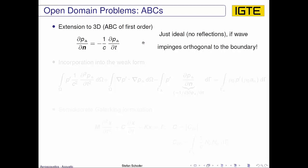This is ideal if the wave impinges orthogonal on the boundary, and then it works perfectly. So if we would have a domain which satisfies that all the waves impinge normal on the boundary, then this type of ABC would work perfectly.